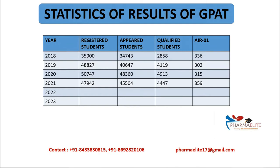Looking at the All India rank 01 scores year by year: 336, 302, 315, and so on. Year after year, irrespective of whether the paper is easy or difficult, the topper's score increases and competition increases. So your chances of qualification have to increase too. That is where you have to work smartly, because everyone is doing hard work — what we need is smart work.